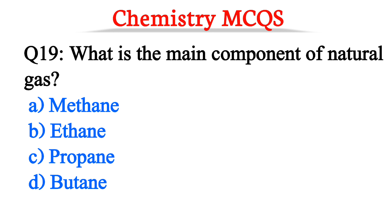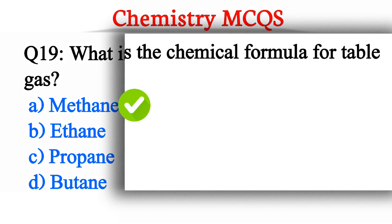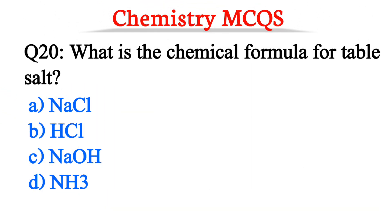Question number 19. What is the main component of natural gas? Question number 20. What is the chemical symbol for table salt? The correct option is option A, NaCl.